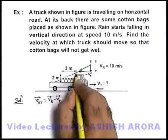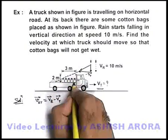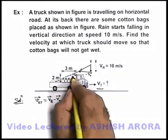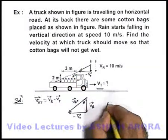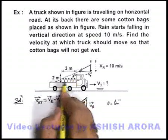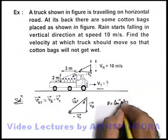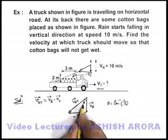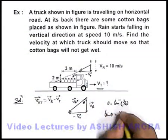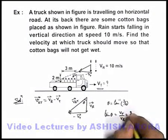From the top corner of this truck, in this situation, the height of the truck above the base of the truck is 2 meters and the horizontal distance is 3 meters. We can simply state that if this angle is theta, then theta can be written as tan inverse of 3 by 2. Or we can use tan(theta) = v_t / v_r, which is equal to 3 by 2.